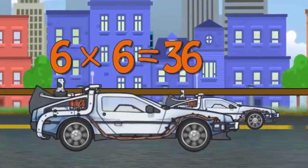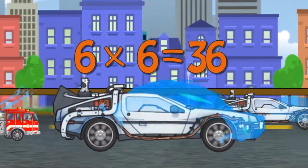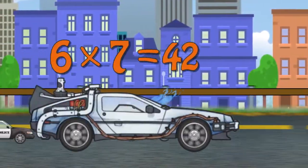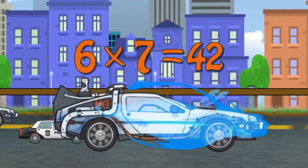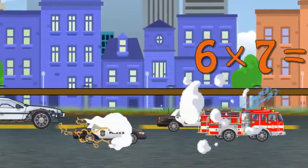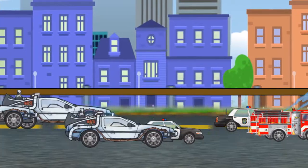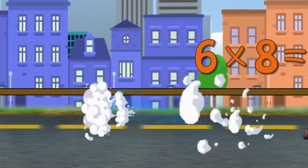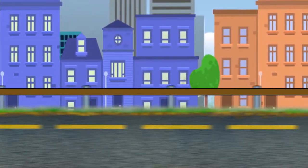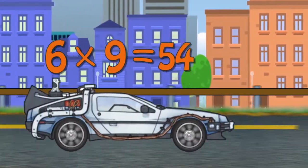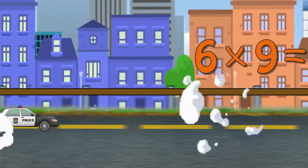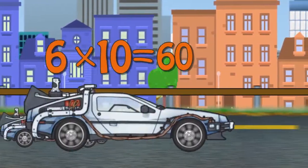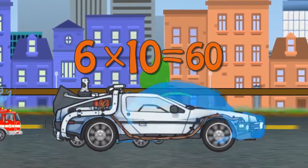Six times six is thirty-six. Six times seven is forty-two. Six times eight is forty-eight. Six times nine is fifty-four. Six times ten is sixty.